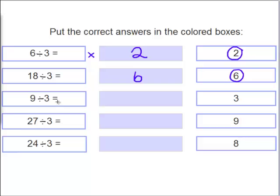9 divided by 3 equals what? Yes, 3. 27 divided by 3 equals 9.